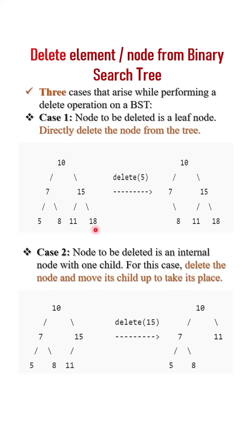Case two: if the node to be deleted is an internal node with only one child, delete the node and move its child up to take its place. For example, if I want to delete 15, I simply move its child up to take its place.